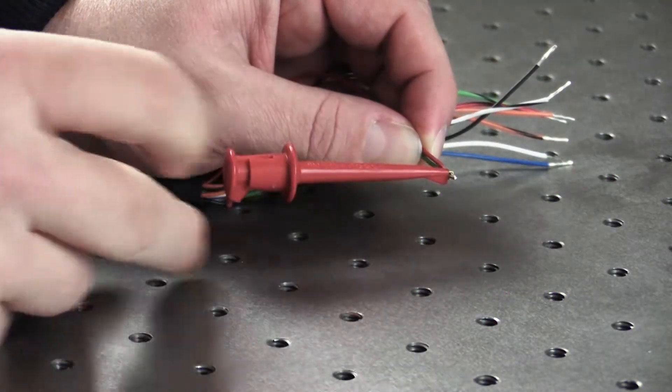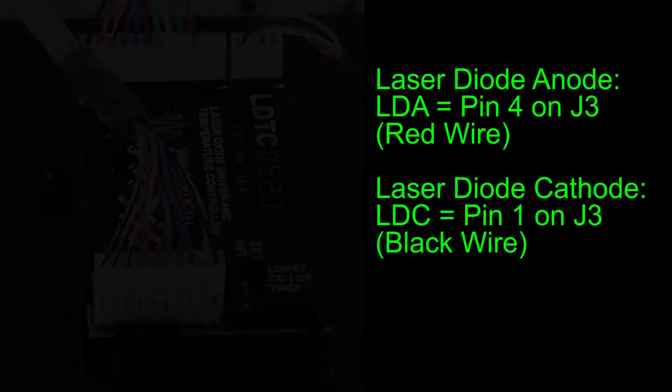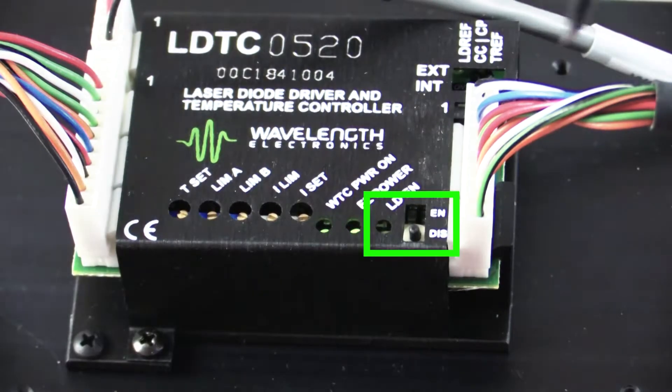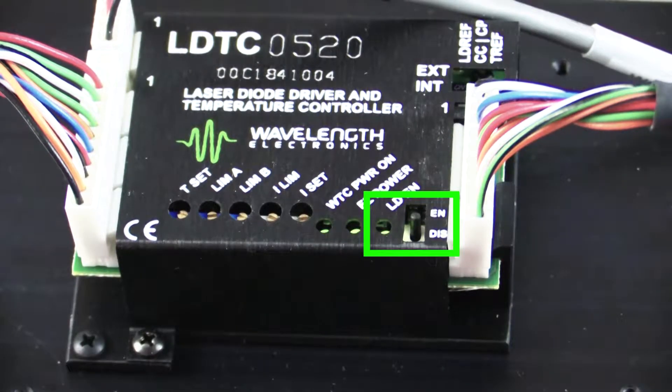Tie the LD Shutdown pin to ground. Next, connect the laser diode test load to laser diode anode and laser diode cathode. We are now ready to enable laser diode current by setting the laser output switch to enable. The LD Enable LED will illuminate green.